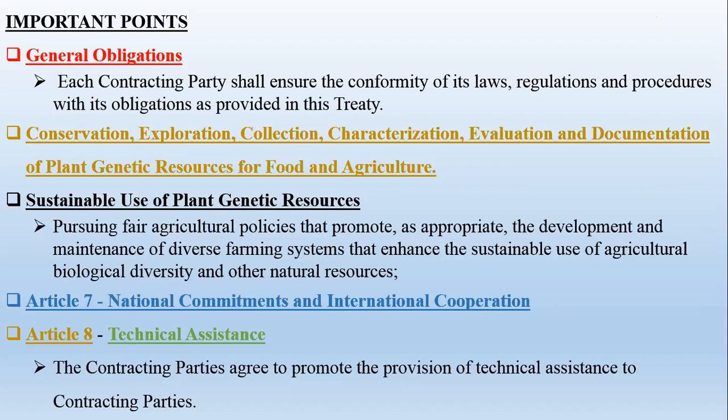Some important general applications must be followed by the members or parties of this treaty. Each contracting party shall ensure the conformity of its laws, regulations, and procedures with its obligations as provided in the treaty. Directives and principles are given for each member, and they must follow all instructions as per the treaty, including conservation, exploration, collection, characterization, evaluation, and documentation of plant genetic resources for food and agriculture.